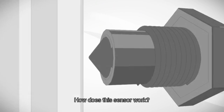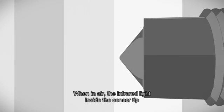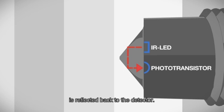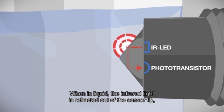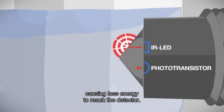How does this sensor work? When in air, the infrared light inside the sensor tip is reflected back to the detector. When in liquid, the infrared light is refracted out of the sensor tip, causing less energy to reach the detector.